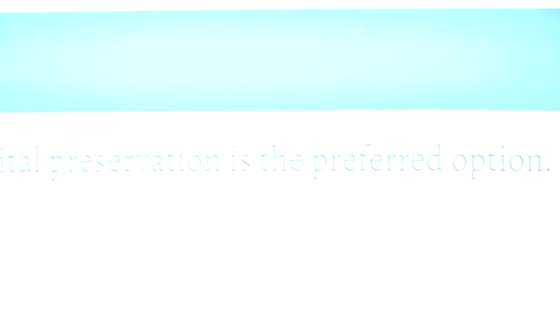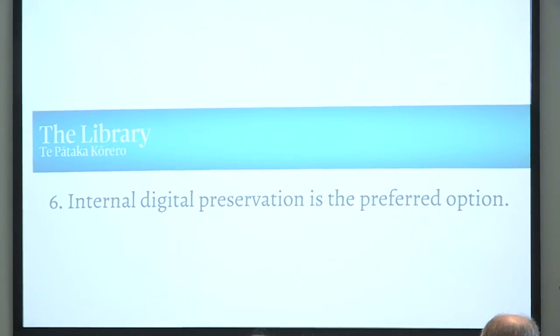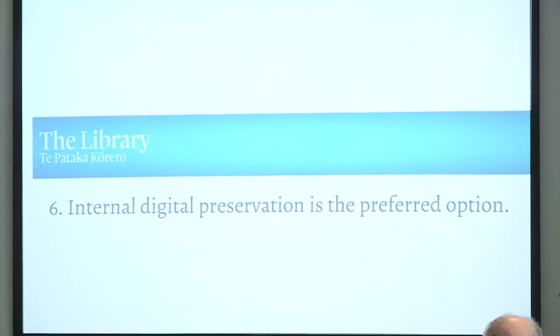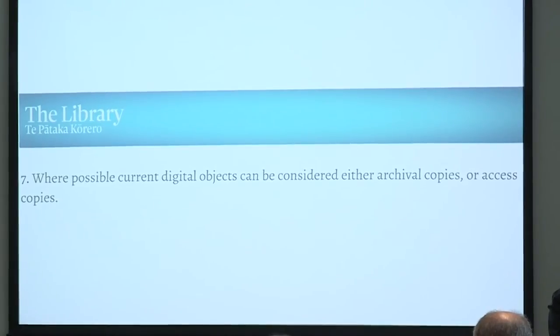The sixth principle is very much an internally focused one: internal digital preservation is the preferred option. This doesn't preclude using external vendors — indeed, having a tertiary external digital preservation service can be advantageous; the more places you store, the better. Rather, this is saying that in the first instance we want to have our internal digital preservation done in-house properly, so we have surety that we're dealing with it how we want to. The seventh principle is that where possible, current digital objects can be considered as both archival copies and access copies. We're drawing a line on what we've got, and moving forward.